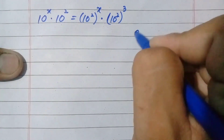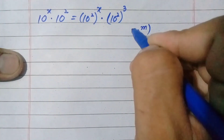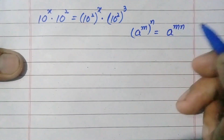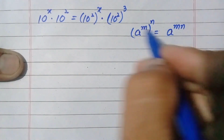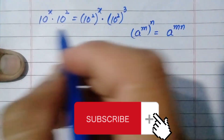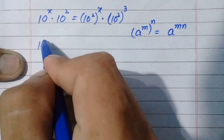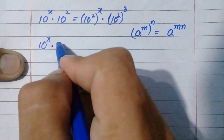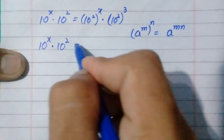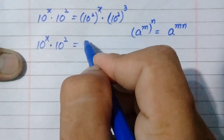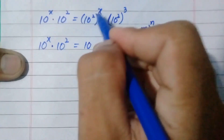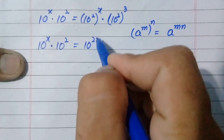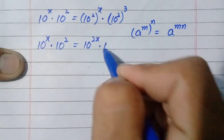Here we use another formula: a power m whole power n is equal to a power mn. We apply this formula on the right-hand side. The left-hand side remains 10 raised to power x multiplied by 10 raised to power 2, and on the right-hand side the exponents are multiplied, giving 10 raised to power 2x, multiplied by 10 raised to power 6.